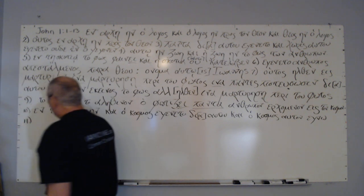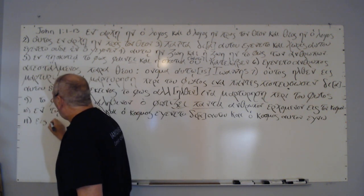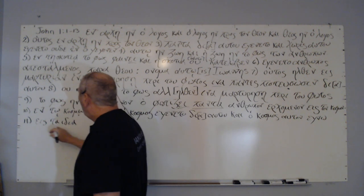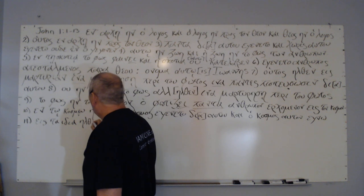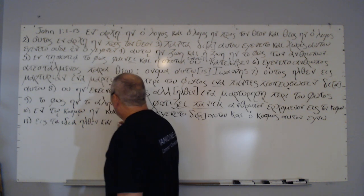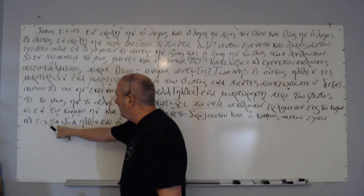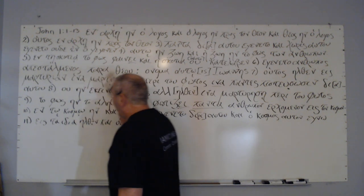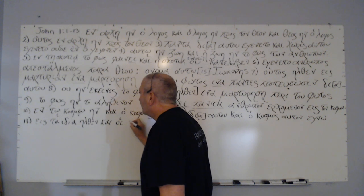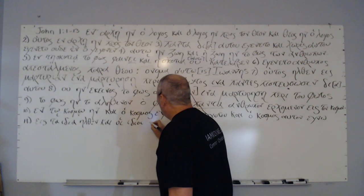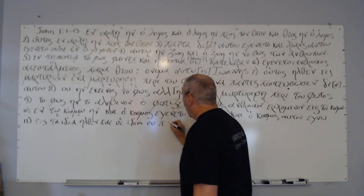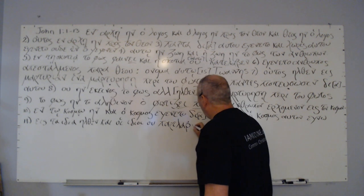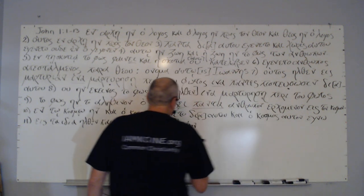Verse 11: 'Eis ta idia ēlthen'—he came into his own things. 'Kai hoi idioi auton ou parelaban'—and his own people did not receive him alongside. Notice this is masculine, the previous was neuter plural referring to created things.